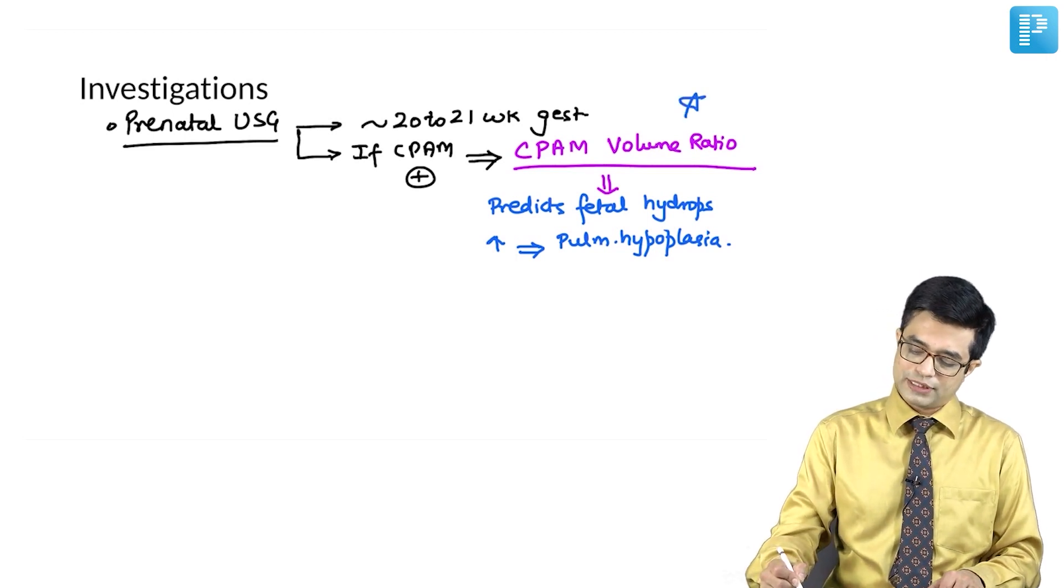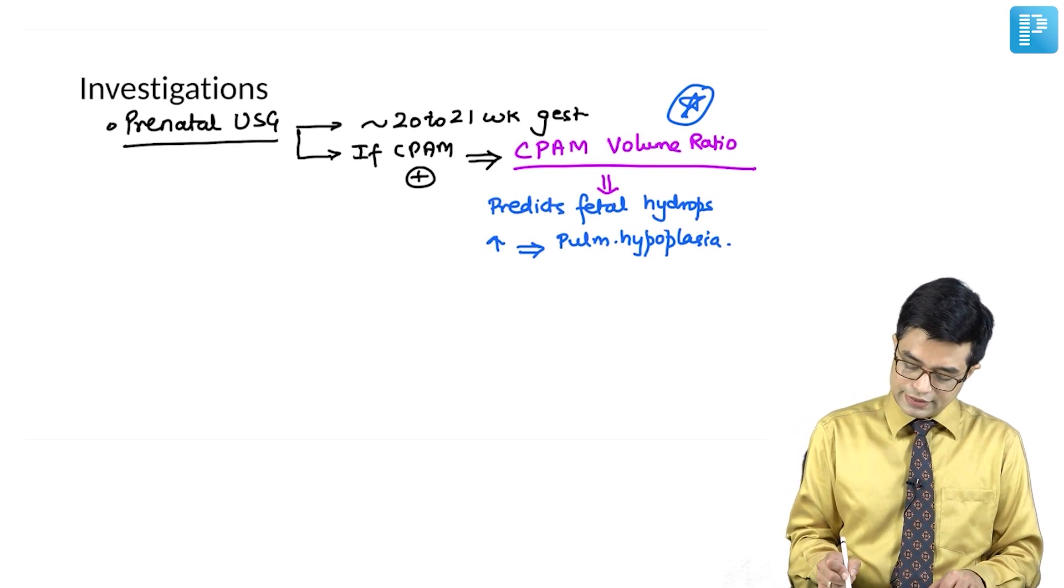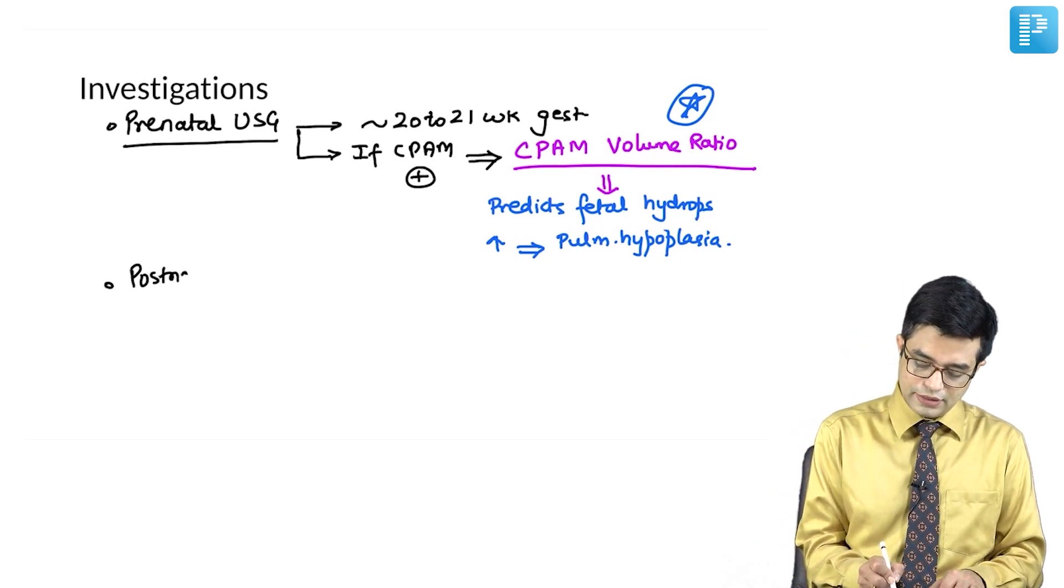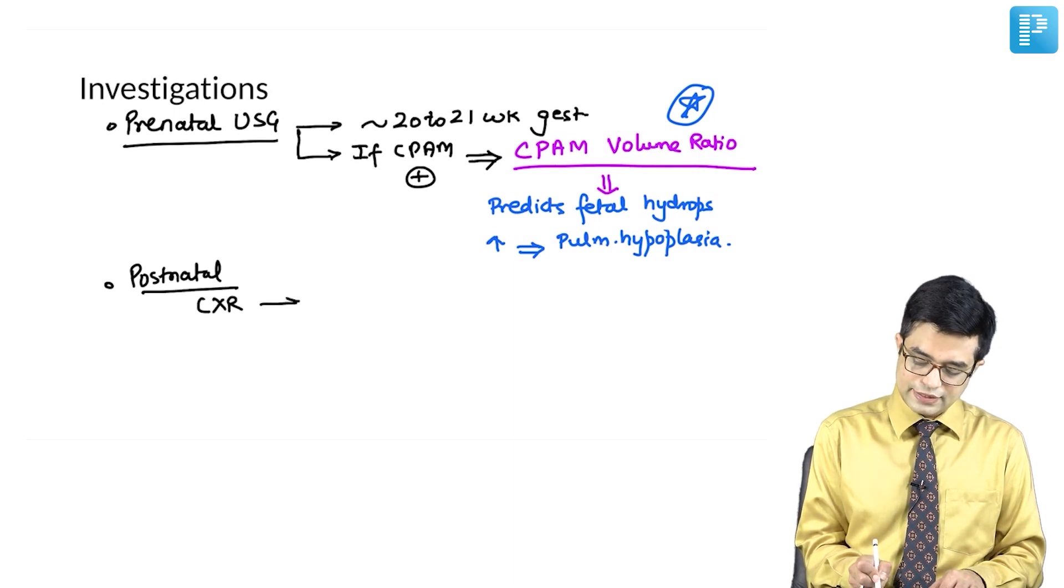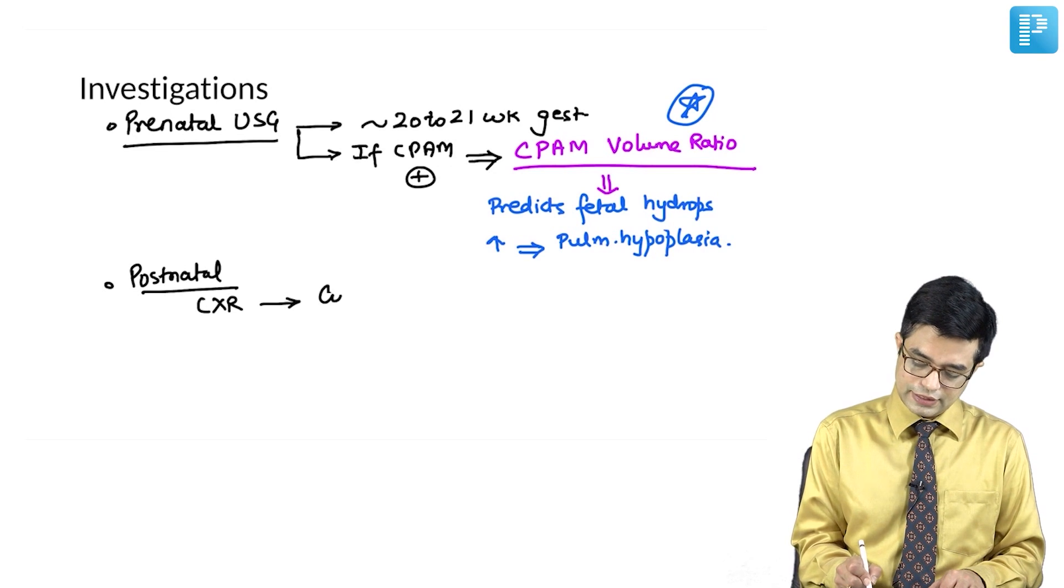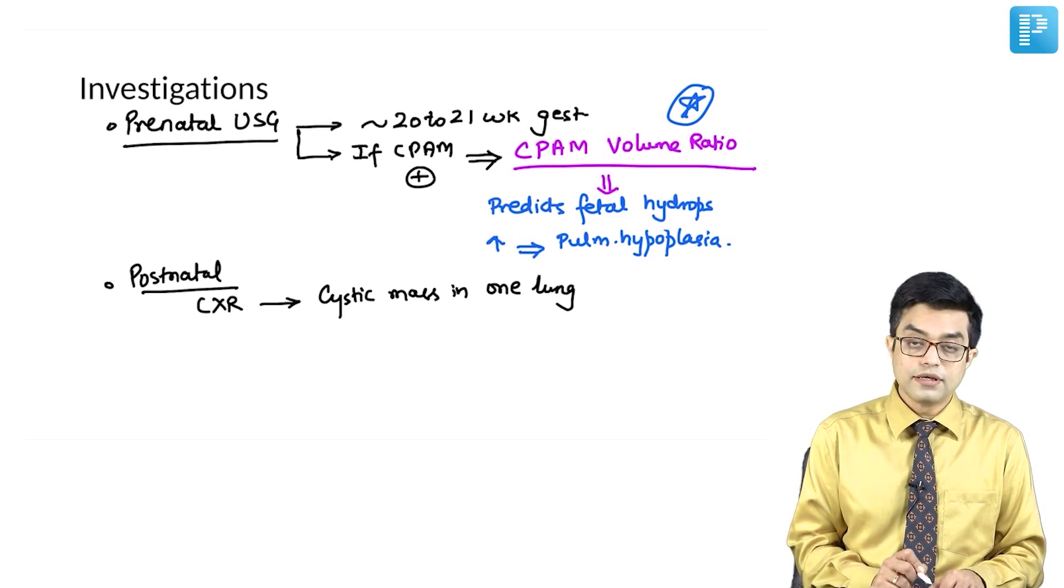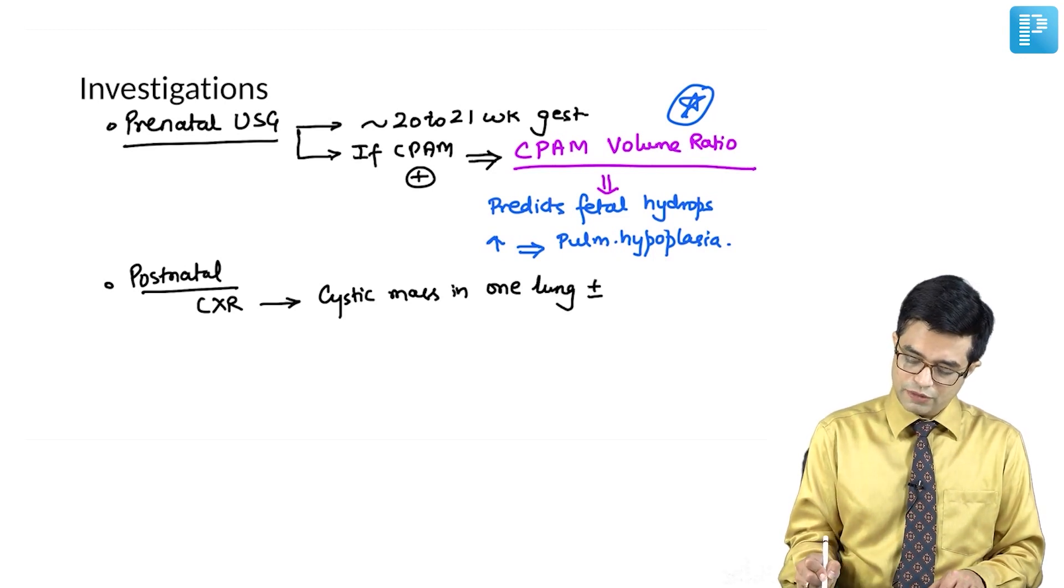CPAM volume ratio is something which can be asked in entrance exams. Postnatally, you will perform tests like chest x-ray. Chest x-ray will show the presence of cystic mass in one lobe or in one lung, which may or may not be associated with mediastinal shift.